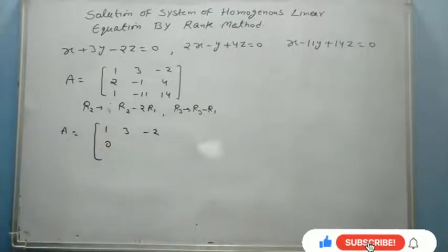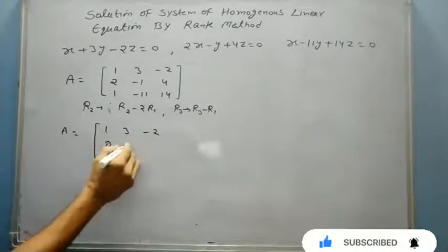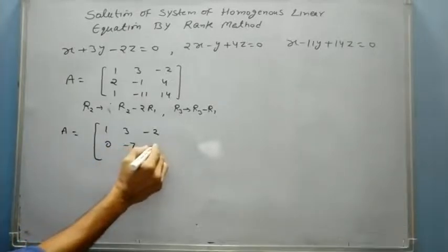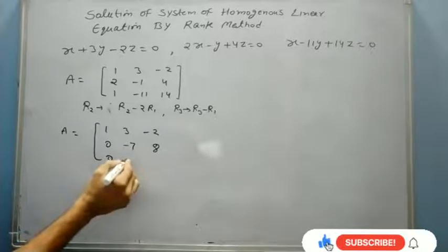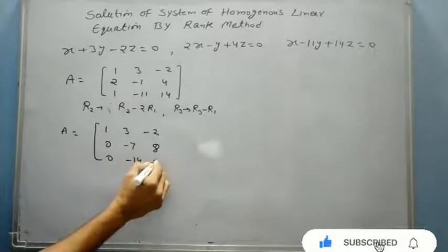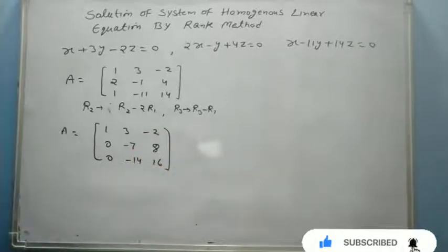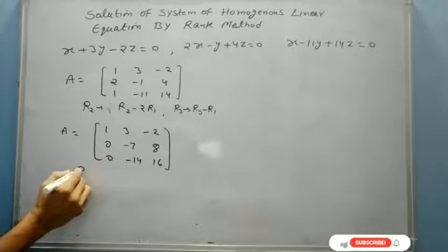This minus this, that will be 0. Minus 1 minus 3 times 2, that will give us minus 7, and that will be 8. The third row will be 0, then it is minus 14, and this will be 16.